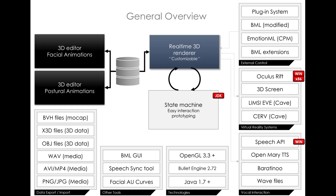The MARC platform, first introduced in 2008, enables creating ECAs that can display appropriate facial expressions, gestures, and postures tied to internal emotional states and communication goals. Underlying MARC is a theoretically grounded computational model that simulates how human emotions arise and translate into external visible cues. Beyond emotional expression, MARC agents are designed to incorporate context and social signals to react in a realistic conversational flow. The framework allows both simulating the micro-level dynamics of emotion as well as longer-term mood, personality, and engagement effects.